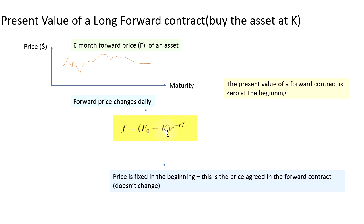That price K is part of the contract and it is fixed — it is not going to change. But the December futures price, which is F₀, will keep changing on a daily basis. So the futures price or forward price will change daily, and because of that, the present value of your contract will change every day based on the futures price in the market.